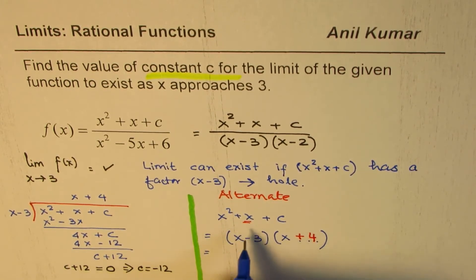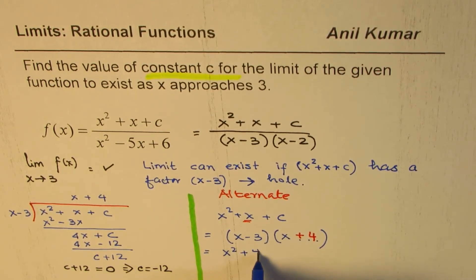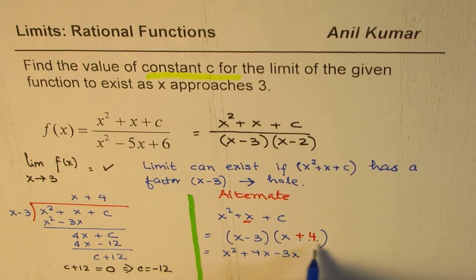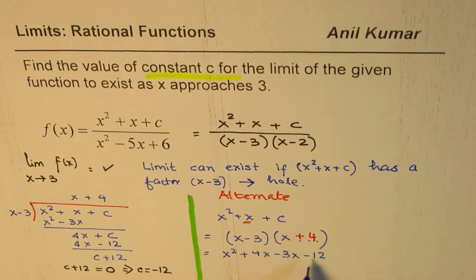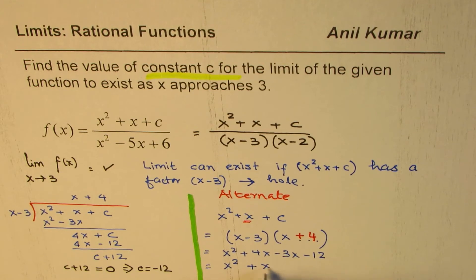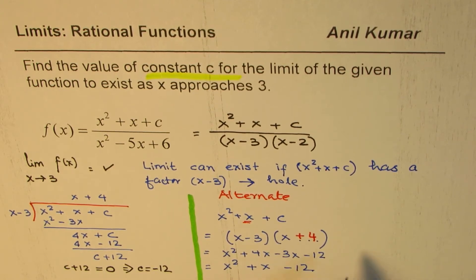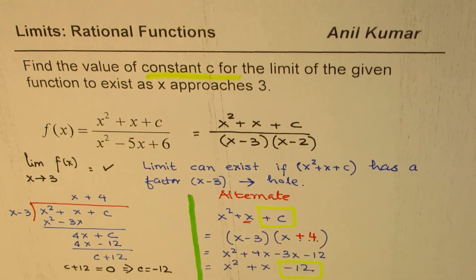let me do it long way. x times x is x squared. x times 4 is 4x. Minus 3x. And minus 12. I'm only showing you that this is the correct value. But we could have written the answer very fast. Anyway, so minus 12. And you combine these two terms, you do get x squared plus x minus 12. And if you compare these two,